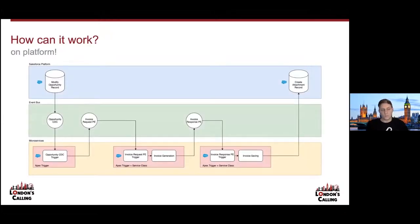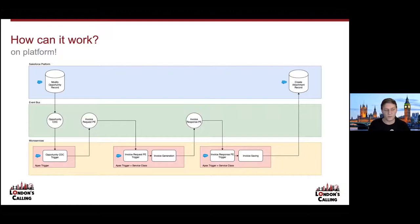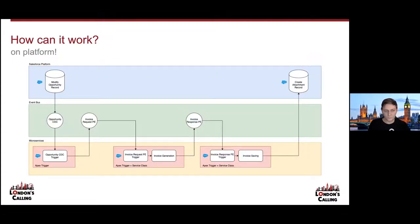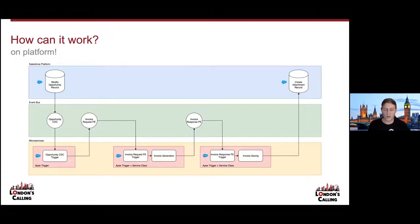Let's look at how it can work on platform. In this example, we've got an opportunity and invoices need to be generated when that opportunity is closed. When we modify the opportunity to close it, a change data capture event is generated onto the event bus. We have our first service — an Apex trigger — which listens for that event and generates its own invoice request platform event. That platform event is then picked up by our next service, which listens for the invoice request, generates an invoice, and fires its own platform event back onto the event bus. The final service listens for that response, takes the contents, and saves it as an attachment to the opportunity record.